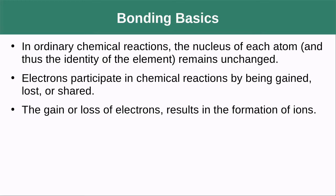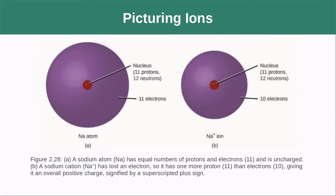In ordinary chemical reactions, the nucleus of each atom and thus the identity of the element remains unchanged — electrons participate in reactions, not protons. These reactions happen through the gain or loss of electrons to form ions. For example, a sodium atom with 11 electrons loses one, gets smaller, ends up with 10 electrons and a positive charge.